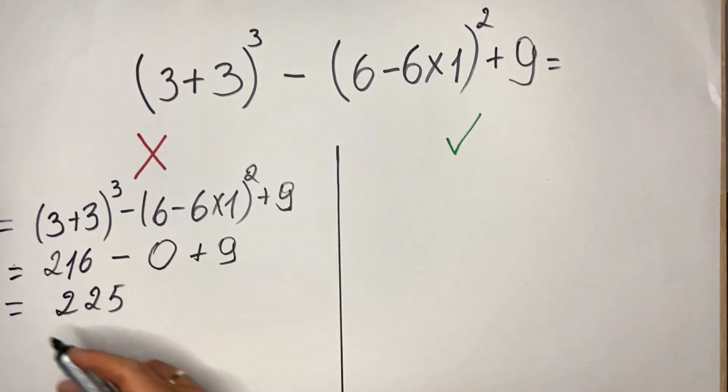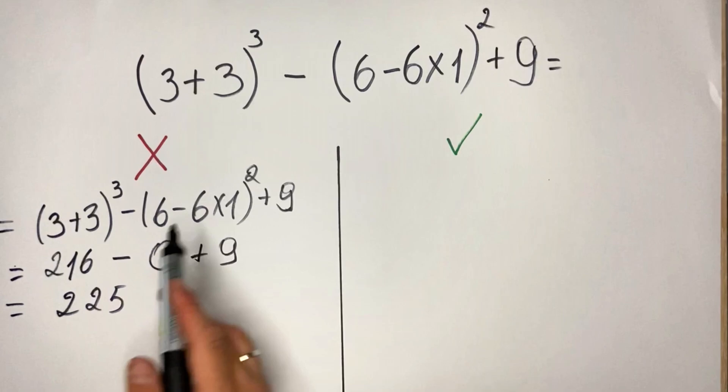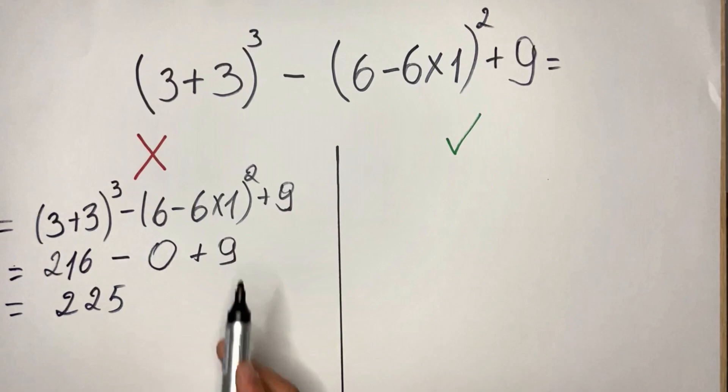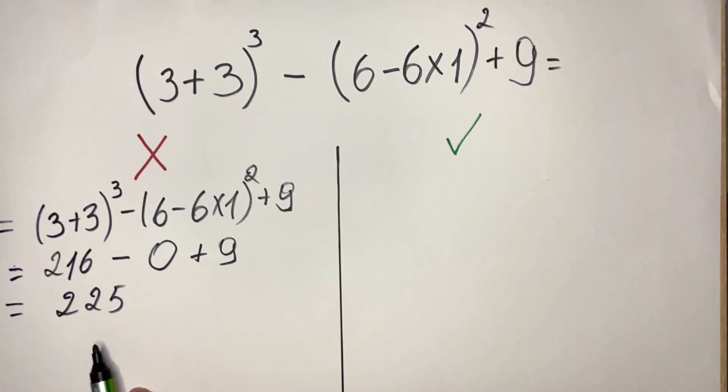Because when you have nothing else, when everything is solved, you do the operation from left to right. So we have 216 minus 0 plus 9. So 225.